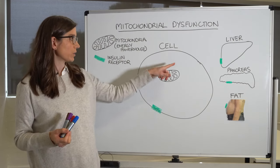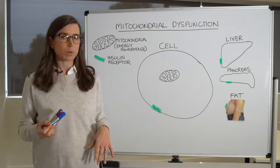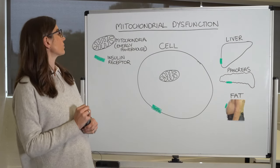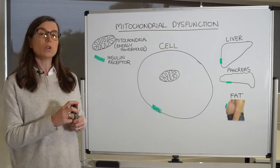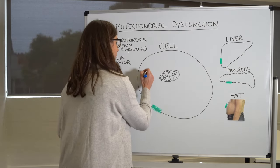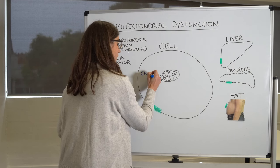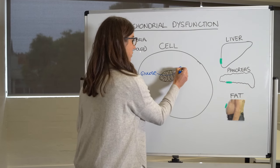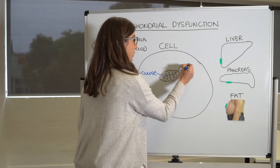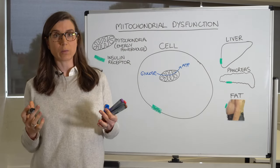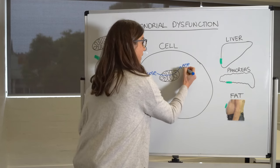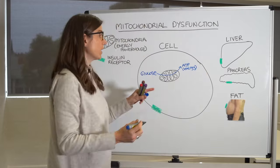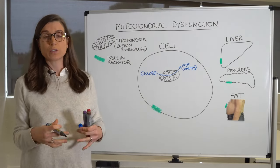All your cells have lots of little mitochondria floating around. What normally happens is you have glucose, which is turned into ATP — the energy currency of the body, or the energy currency of the cells. ATP is energy, and this energy is then available for the cell to use to function properly.